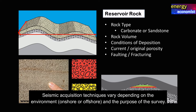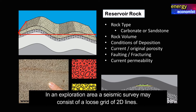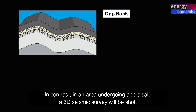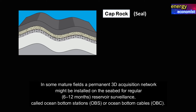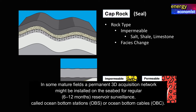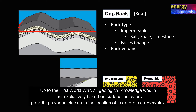and the purpose of the survey. In an exploration area, a seismic survey may consist of a loose grid of 2D lines. In contrast, in an area undergoing appraisal, a 3D seismic survey will be shot. In some mature fields, a permanent 3D acquisition network might be installed on the seabed for regular 6- to 12-month reservoir surveillance, called ocean bottom stations (OBS) or ocean bottom cables (OBC).